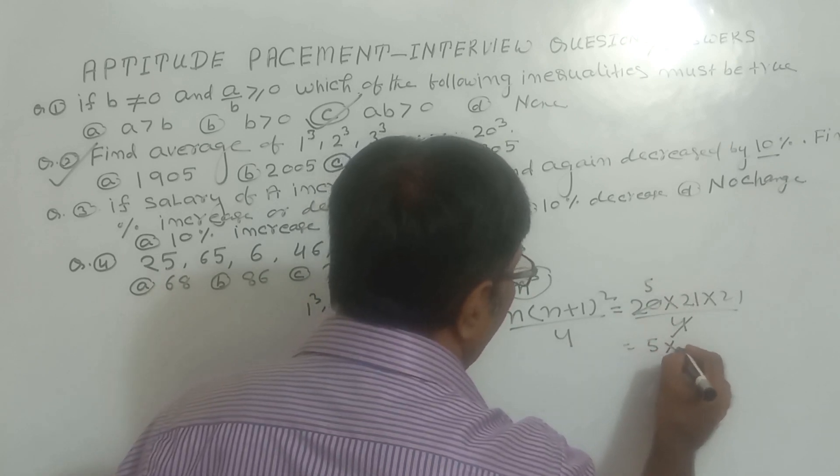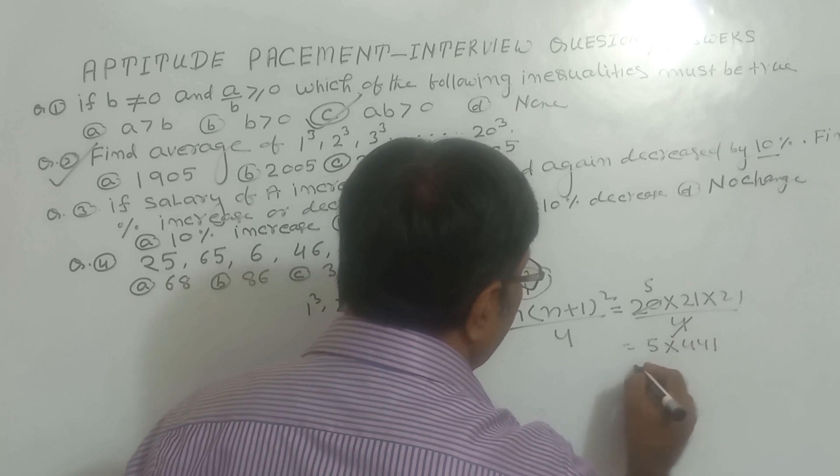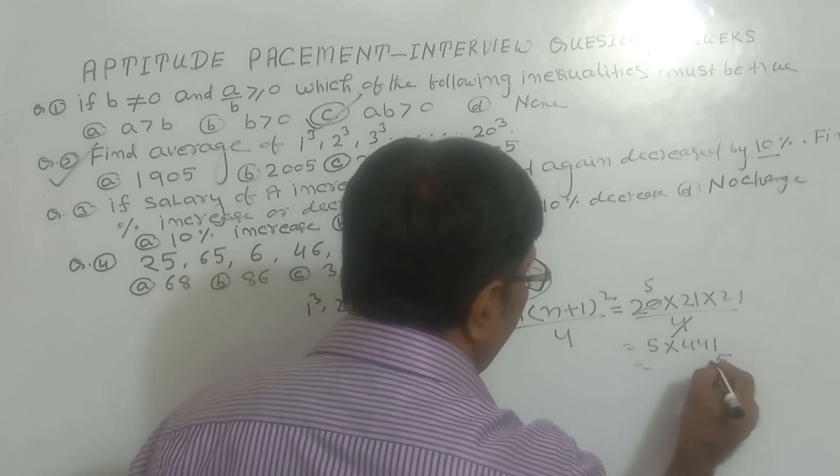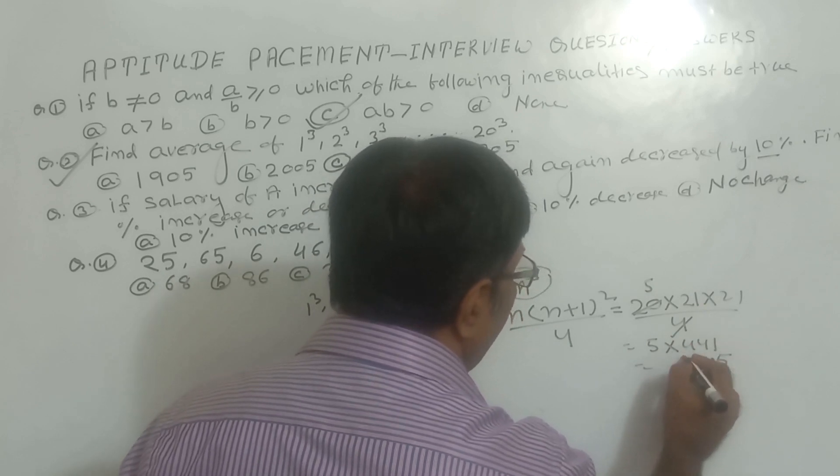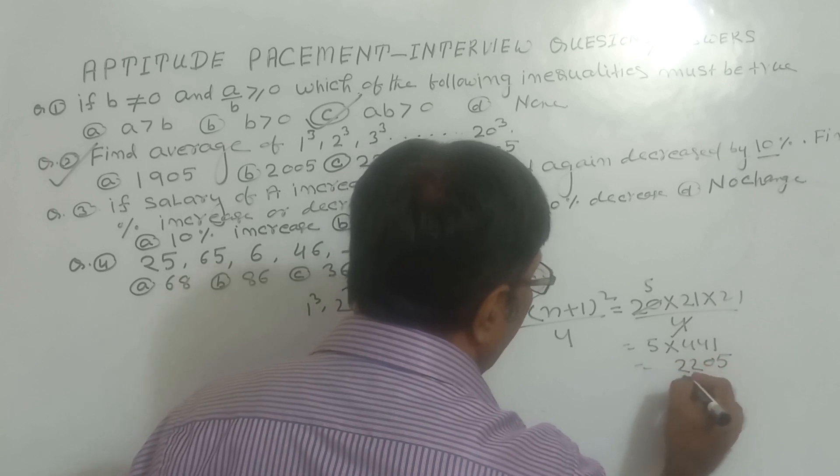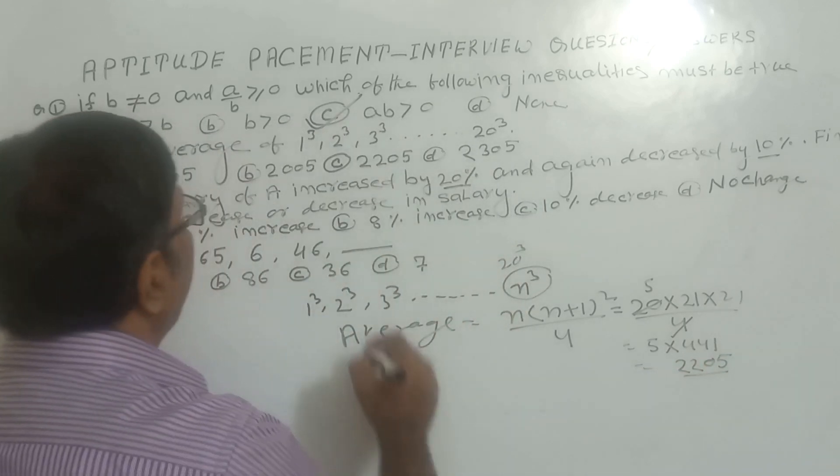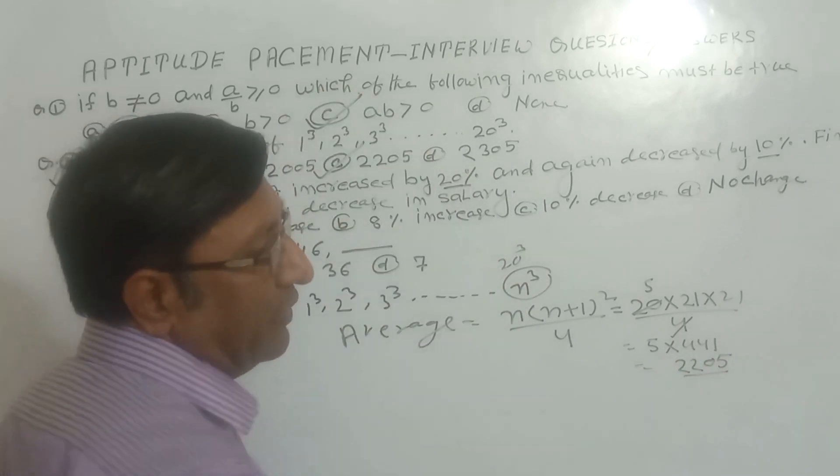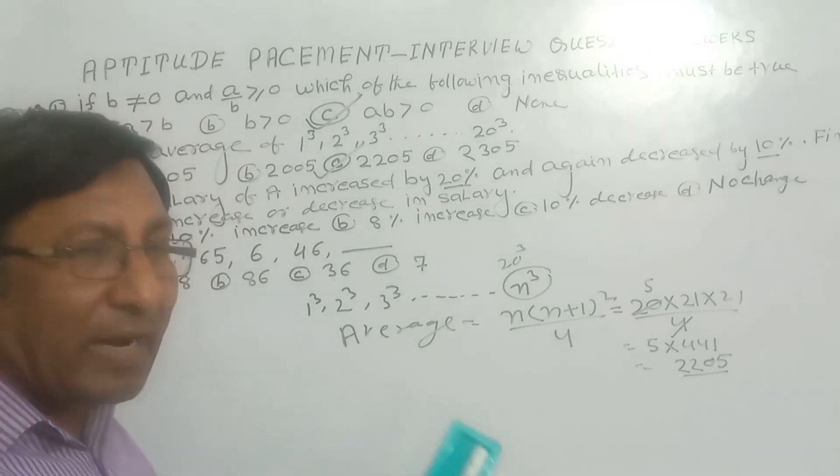Now you know 5 into 441. So this is 5 times 1 is 5, 5 times 4 is 20, and 5 times 4 is 22, which gives us 2205. So C option is the right answer.